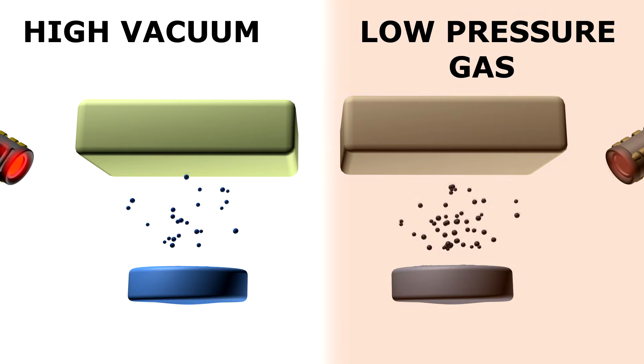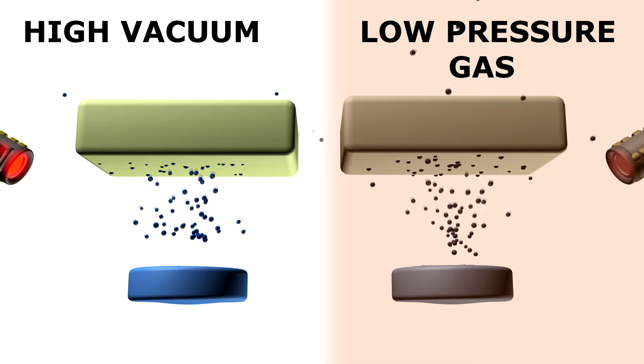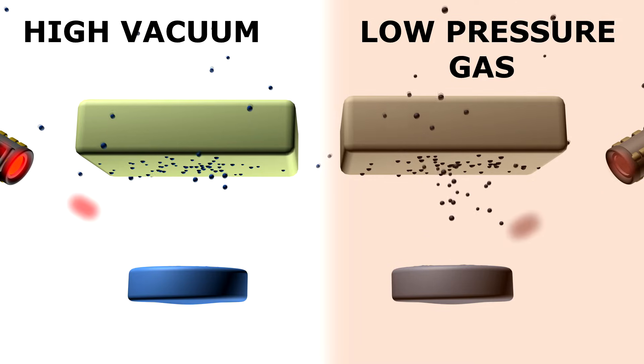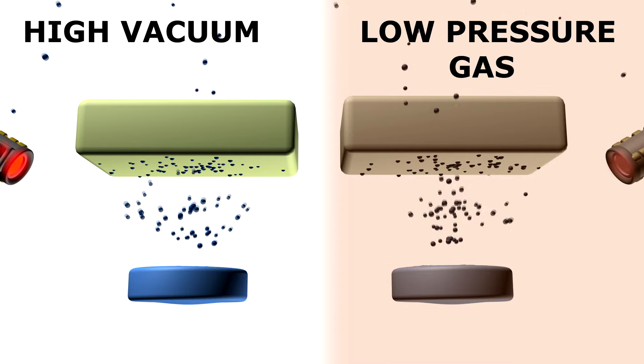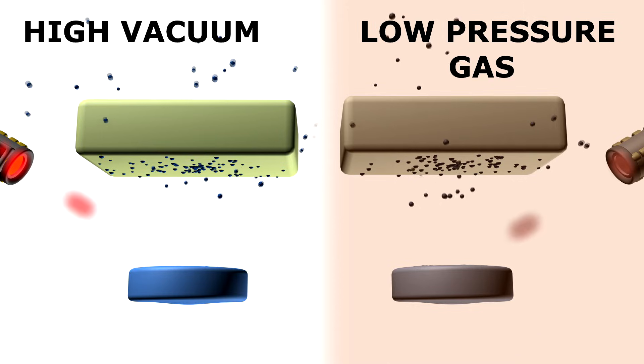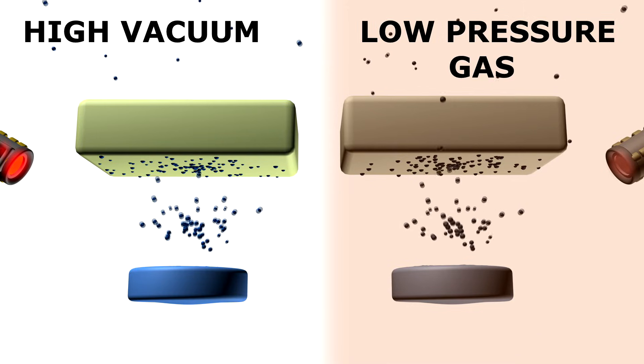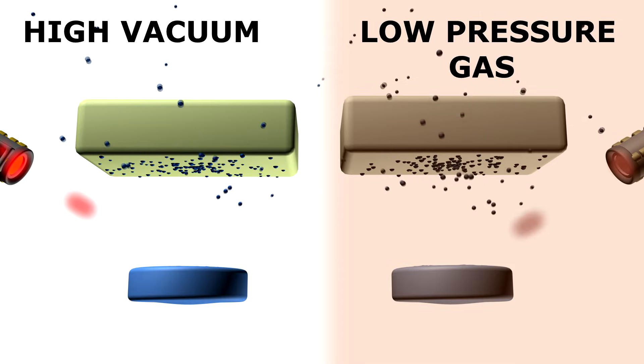It should also be noted that the kinetic energy of the particles arriving on the growth substrate depends on the pressure of the gas in the chamber. Using background gas reduces the kinetic energy of the particles and allows obtaining films with high crystallinity.